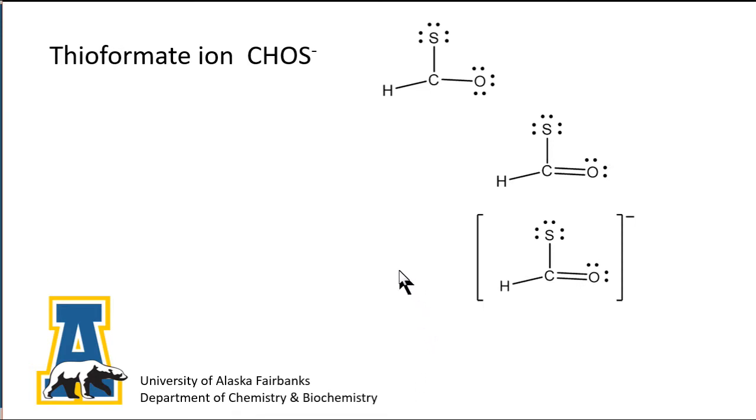Recall we are using thioformate ion as an example. Earlier we drew one Lewis formula which required forming a carbon-oxygen double bond so that carbon, oxygen, and sulfur all had octets.